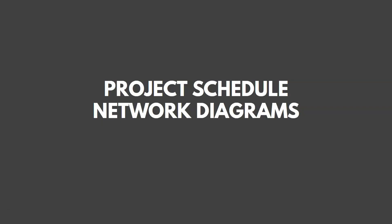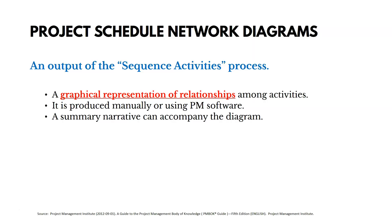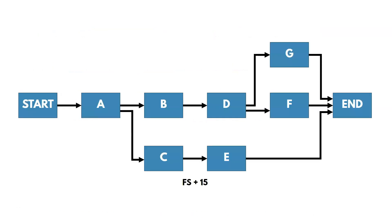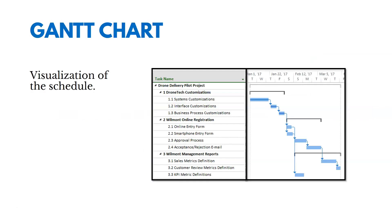Now we take these sequences, relationships, and dependencies and put together project schedule network diagrams. This is the output of the Sequence Activities process — a graphical representation of relationships among activities, usually produced using project management software, often accompanied by a narrative. The diagram shows the order or sequence of activities and any leads or lags. In this example, all relationships are finish-to-start, but between C and E there's a plus-15 lag, meaning once C is finished, we wait 15 days and then E can start. Another common visualization is a Gantt chart.